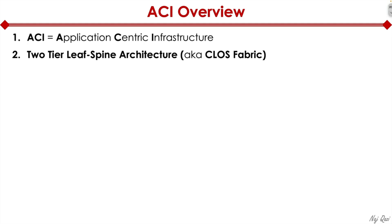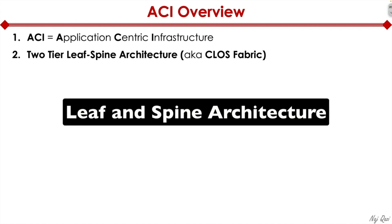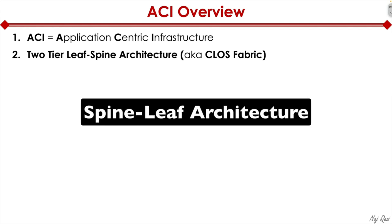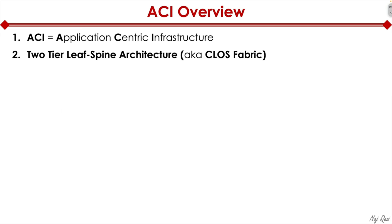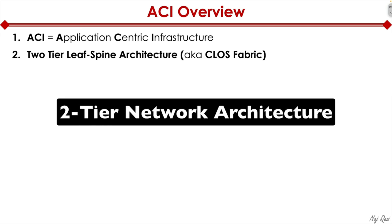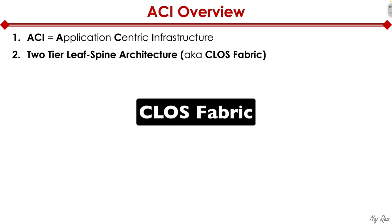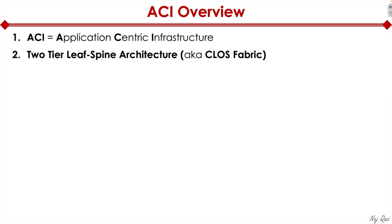Before getting into the topology of leaf-spine, a couple of terminology points to keep in mind. In some literature you may see it called leaf-spine architecture, leaf and spine architecture, spine-leaf architecture, spine and leaf architecture, or simply a two-tier network architecture or Clos fabric. All of these terms can be used interchangeably — they all mean the same thing, so do not get confused as you switch from one source to another.